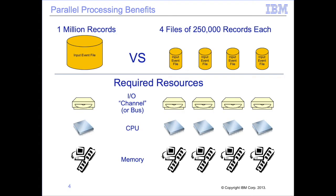Parallelism allows for use of more resources to complete a task in a shorter period of time. For example, if the view requires reading 1 million records to produce the appropriate output, and the computer can process 250,000 records a second, it will require 4 seconds at minimum. If the file is divided into 4 parts, the output could be produced in 1 second. Doing so requires adequate system resources in the form of I/O channels, CPUs, and memory.